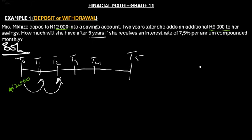Then after two years she decided to add a R6,000 into her account. So here she decided to add a R6,000 into her account.